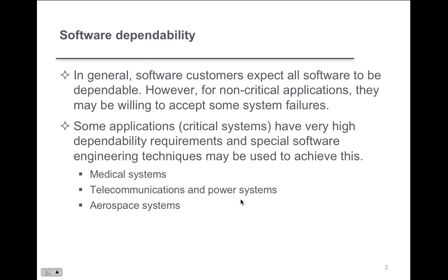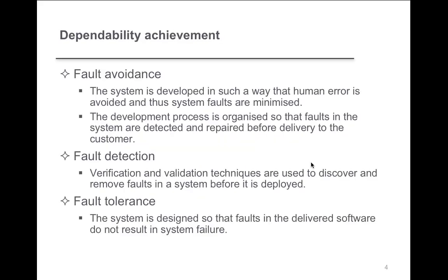Telecommunications and power systems, phone lines, cell phone service — is our system dependable when 2,000 people are downloading at once? You can't depend on it. Aerospace systems, flight control systems, autopilot systems — anything that is mission critical or sensitive, heart monitors, anything where somebody's life or safety is depending on the software running correctly. So how do we achieve dependability?